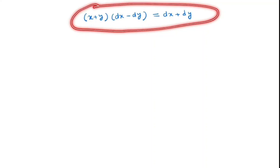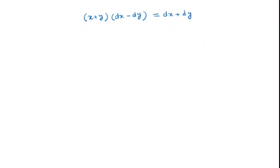The ODE is: x plus y times dx minus dy is equal to dx plus dy. So first, let's try to simplify this equation. We can write it as dx minus dy is equal to dx plus dy divided by x plus y.